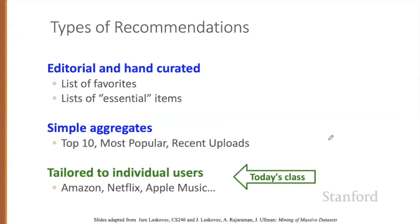Of course, there are many ways that recommendations happen. Someone could curate a list of favorites, or an outlet could publish some lists of essential items, or we could rely on user data via simple aggregates like top-10 lists or most popular lists. What we'll focus on today, however, is the third approach: making recommendations tailored to individual users.